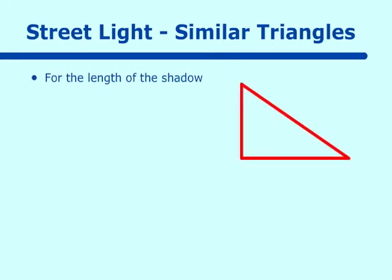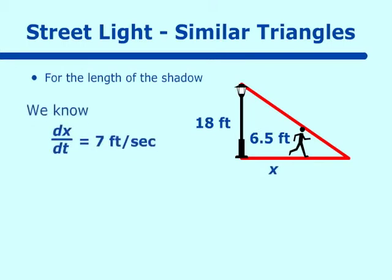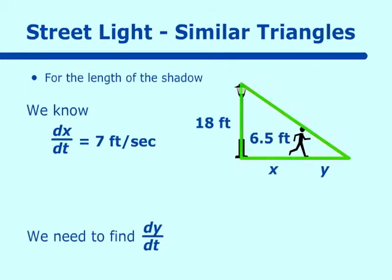Creating our triangle: we have a pole that's 18 feet tall, and a man who is 6.5 feet tall walking away from the pole. We call the distance from the pole to the man x, so dx/dt = 7 feet per second. We call the shadow length y, and we need to find dy/dt. We set up the ratio of the large triangle to the small triangle: 18/(x + y) = 6.5/y.